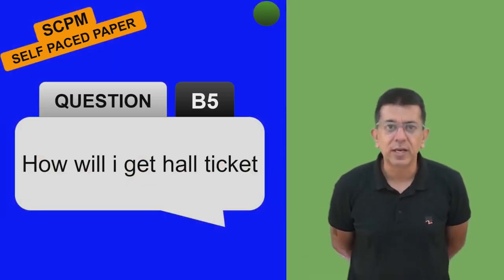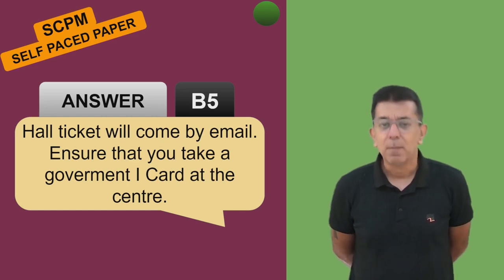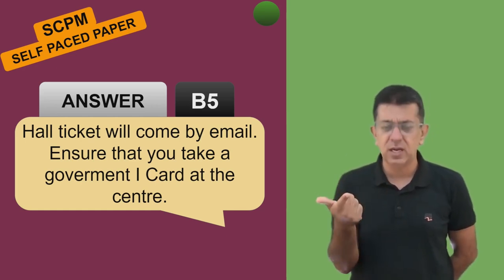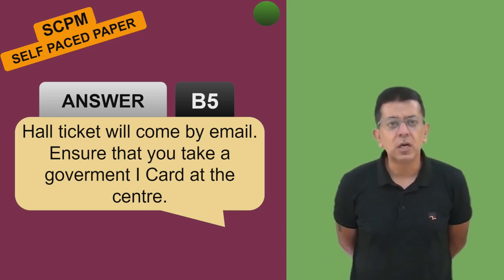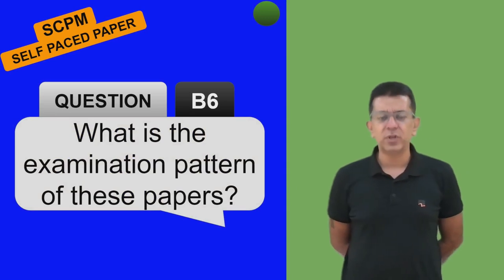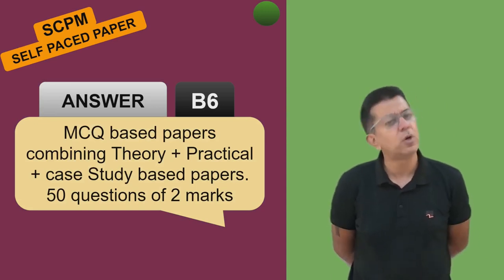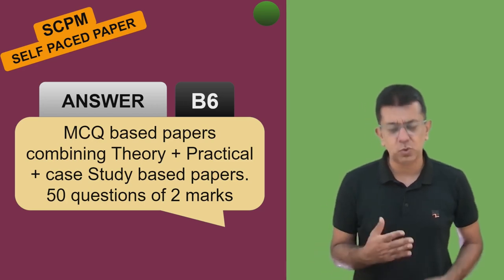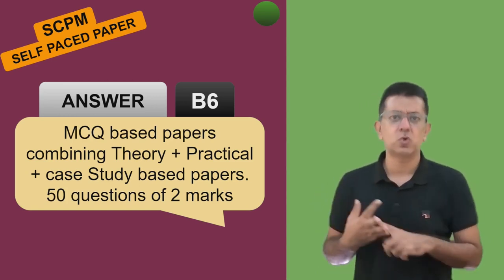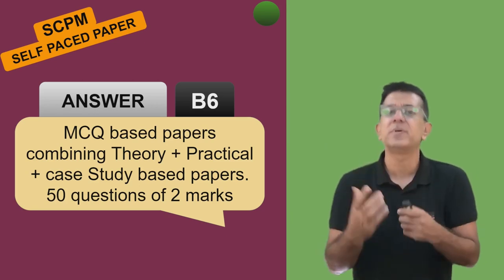How will you get the hall ticket? The hall ticket will come by email. Take your hall ticket to the examination center along with a government ID like Aadhaar card or PAN card for verification. The email usually comes within 24 hours of registering. What is the examination pattern? The paper is of 100 marks. There will be 50 questions of two marks each. It will be all MCQ-based covering theory, practical parts, and case study based questions where they give a paragraph and ask many questions around a business situation.